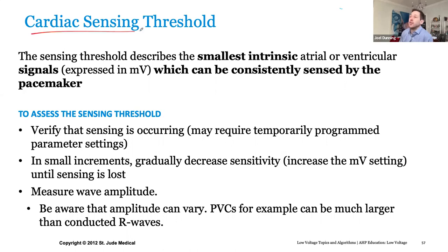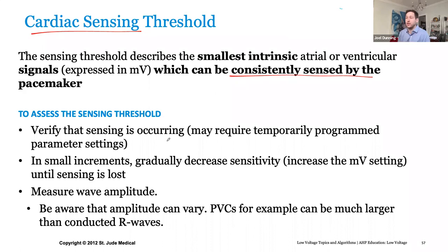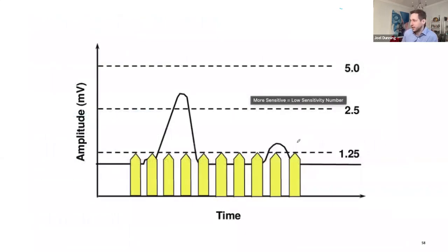Next we talk about sensing and the threshold behind it. Similar to capture but the inverse — it's the smallest intrinsic signals that can be consistently sensed by the pacemaker. The device can measure the amplitude of the sensed R wave or P wave, or you can manually decrease the sensitivity. Here's a good diagram: here's your R wave, here's your T wave. This device would effectively be double counting because the sensing threshold is set so low. So we'll slowly raise this fence until it's enough to consistently sense without over-sensing the T wave — that will be your new sensing threshold.